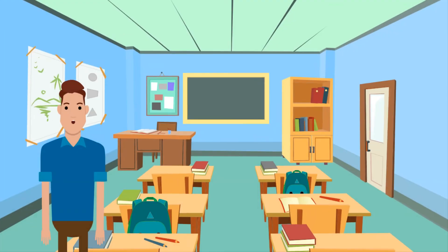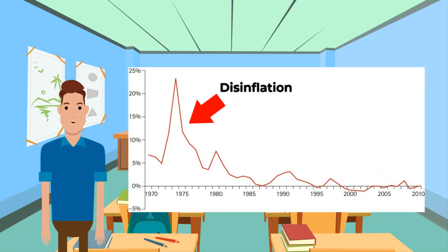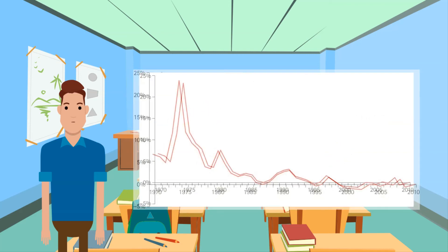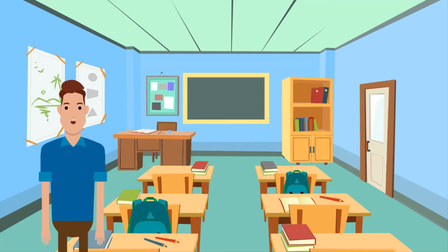That brings us to the last topic for today: what is deflation? Disinflation refers to a slowdown in the rate at which prices are rising in general, but deflation involves a continuous decline in the general level of prices in an economy.